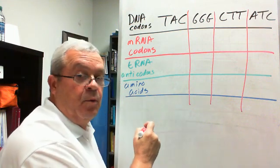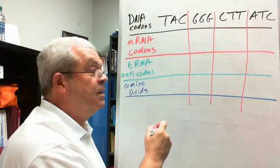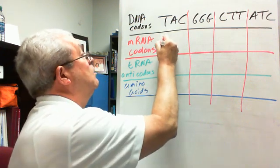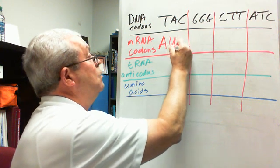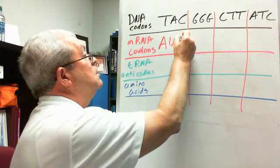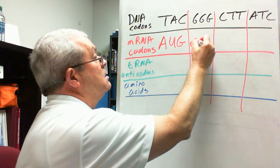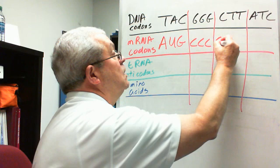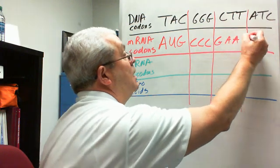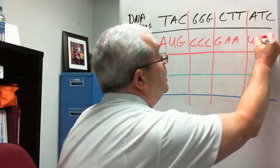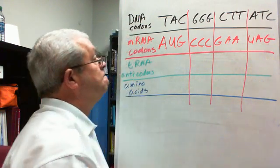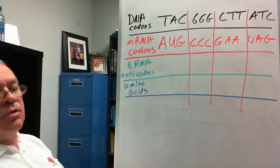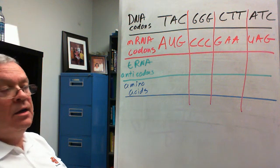You might try writing these down, pause it, and see if you get the right answer. Okay: T, A, A becomes U, C, G. And this is C, C, C, C, C, G. Then T, A, T, A, A, U, T, A, C, G. Those would be the corresponding messenger RNA codons.